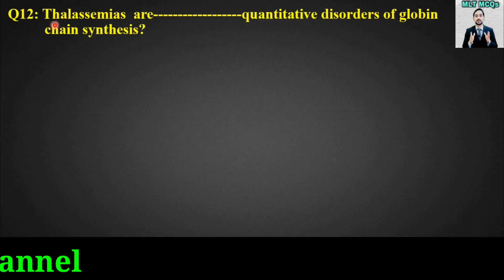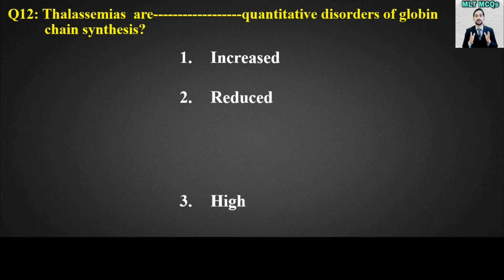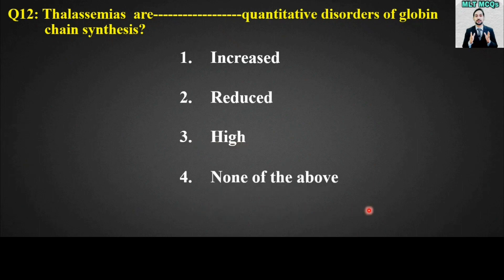Last MCQ: Thalassemias are blank quantitative disorders of globin chain synthesis. Options are: increased, reduced, high, or none of the above. The right answer is option number two — reduced. Thalassemias are reduced quantitative disorders of globin chain synthesis.